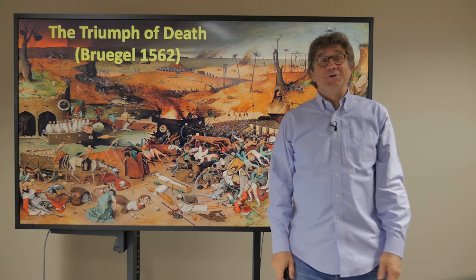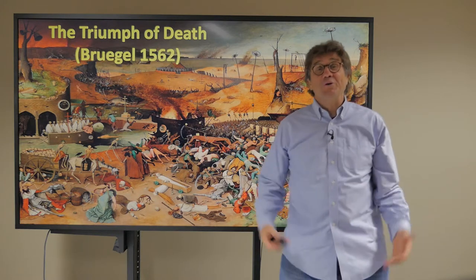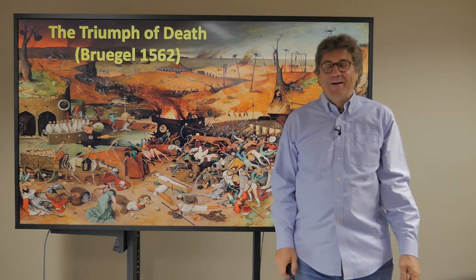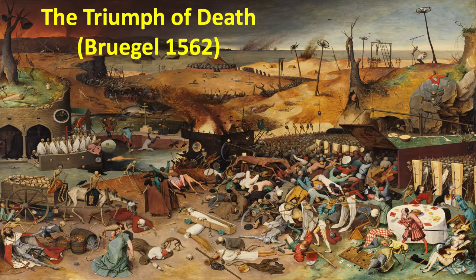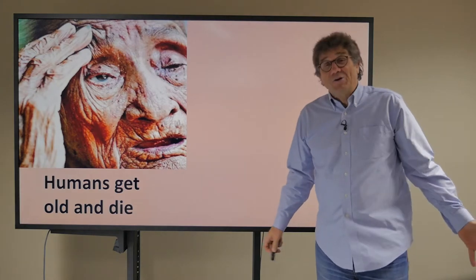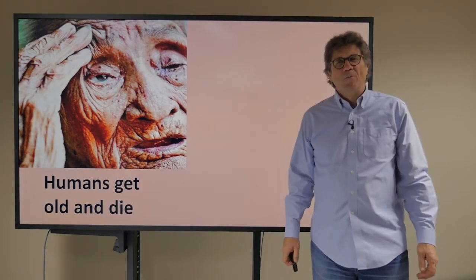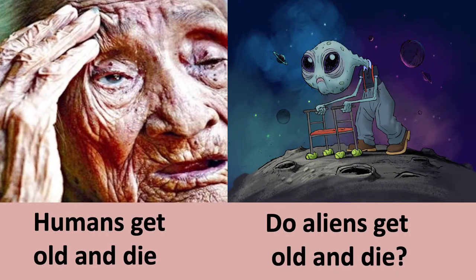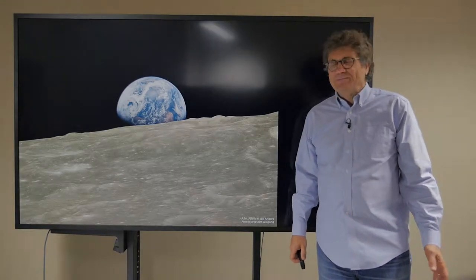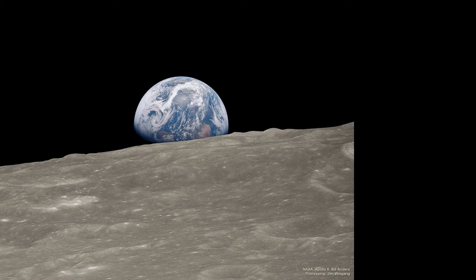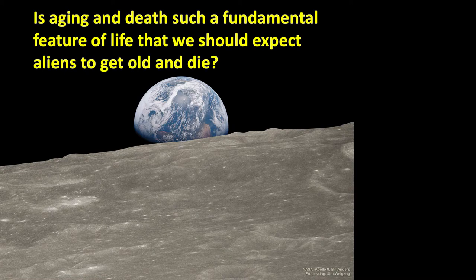Death is something that's going to happen to us all. We've got to deal with it. This is Bruegel's way of dealing with it, but humans get old and die. What about aliens? Do aliens get old and die? Another way of asking that question is: is aging and death such a fundamental feature of life that we should expect aliens to get old and die?